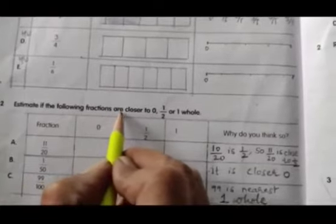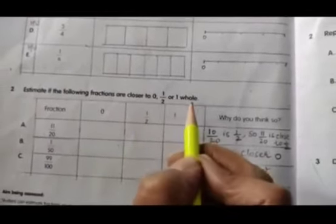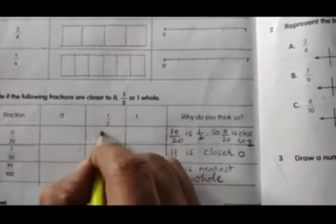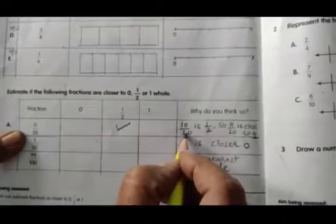Second question. Estimate if the following fractions are closer to 0, half, or 1 whole. Fraction 0, half, 1. Why do you think children? First bit, 11 by 20. 11 by 20 is closer to 0, half, or 1? It is closer to half. Because 10 by 20 is half of 20. 11 is closer to half. So 10 by 20 is half, so 11 by 20 is close to half.